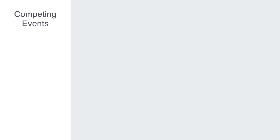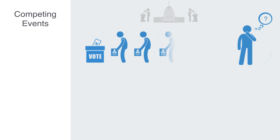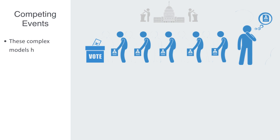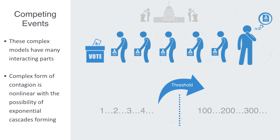There might also be two competing events propagating across the network. An example might be modelling how an individual will vote for two different candidates in an election based upon the social network they're part of. We could define some variable as to how many of a node's neighbors need to vote for a particular party before they would also cast their vote for that party. These complex models have many interacting parts, thus there will be tipping points, as a node will not do anything until a threshold value is met. There is also feedback — as when a node changes its state, it will affect the choice of others around it. All of this means that this more complex form of contagion is non-linear, with the possibility of exponential cascades forming.